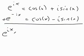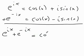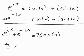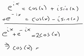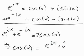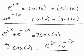e to the ix plus e to the negative ix equals what? The cosines add up. The i sines cancel out. That means that the cosine of x is equal to e to the ix plus e to the negative ix over 2.